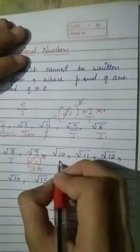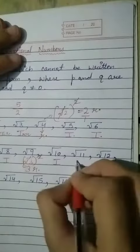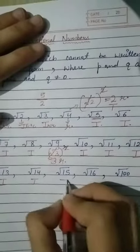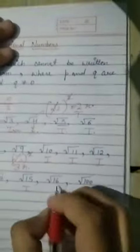√10 also you cannot square, so this is also irrational. Those which we cannot square, what are all those numbers? Irrational. √14 also we cannot do, √15 also cannot.